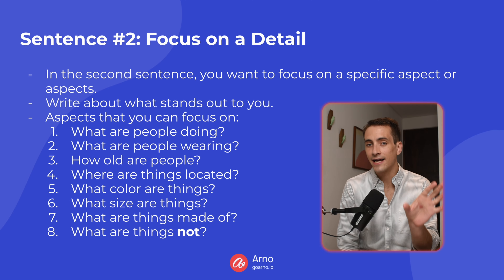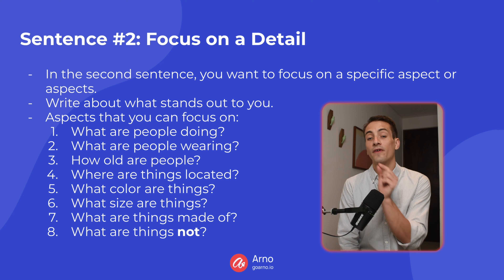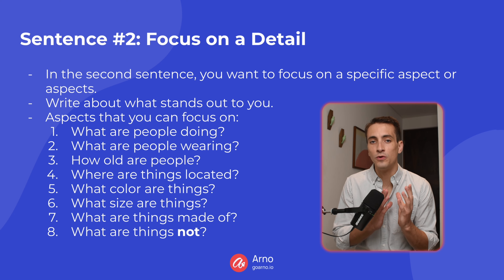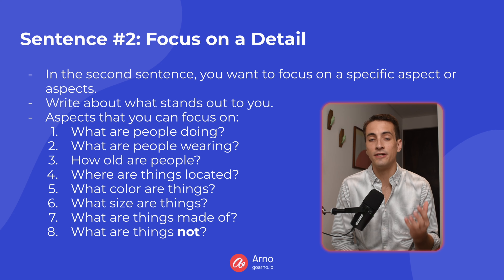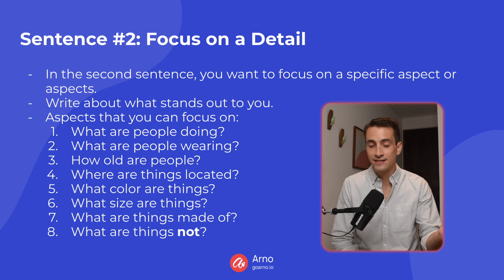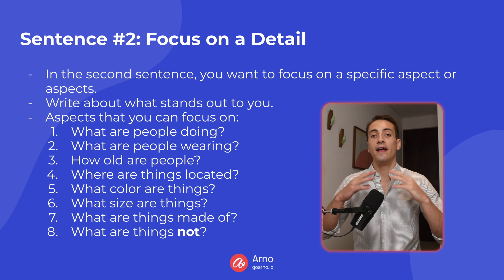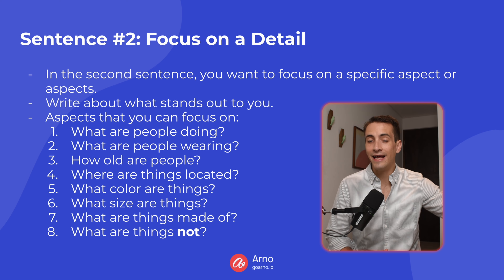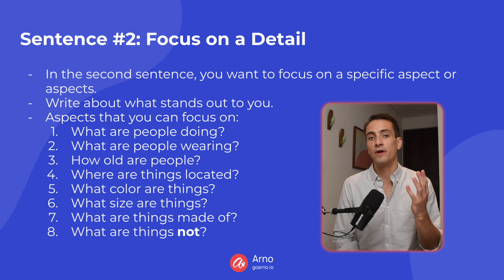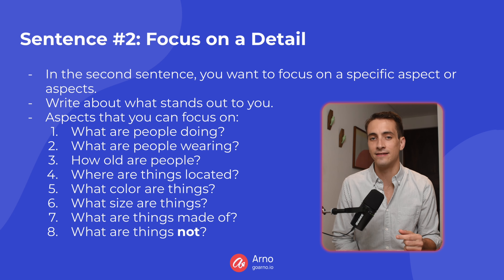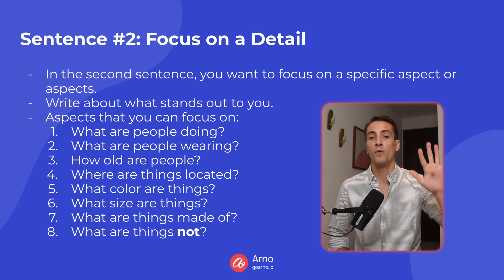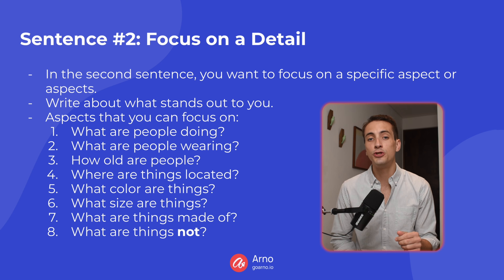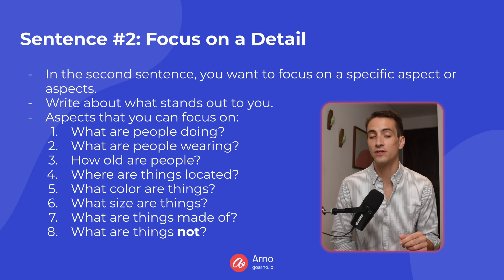Another thing to note about this second sentence is that unlike the first sentence and unlike the third sentence that we will see later, it's impossible to give you specific vocabulary that will work for every single image. This is because the details in every image are going to be different, and the things that you notice in each image are going to be different. So for this second sentence, you have to be more flexible. However, we have a ton of other videos on our YouTube channel that will teach you vocabulary and other tips that will help you, especially with this second sentence.